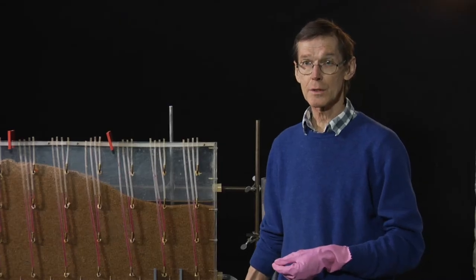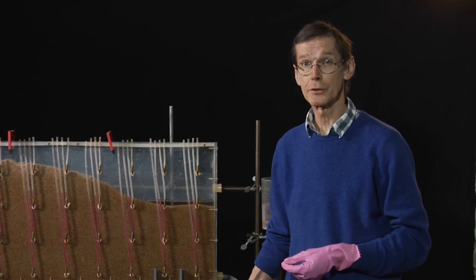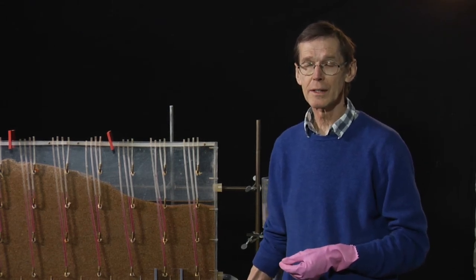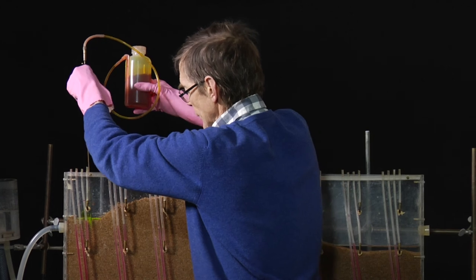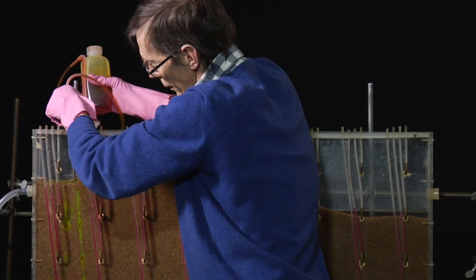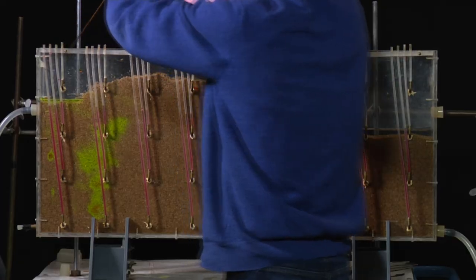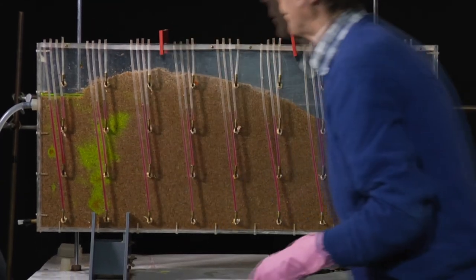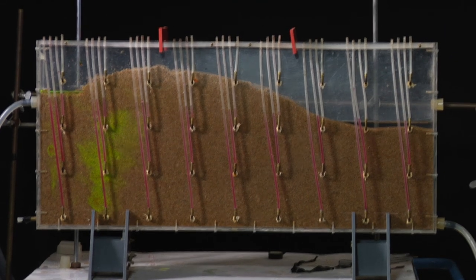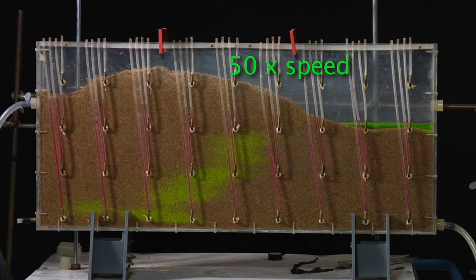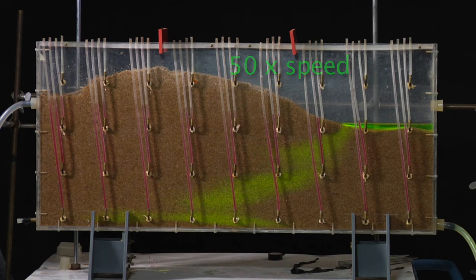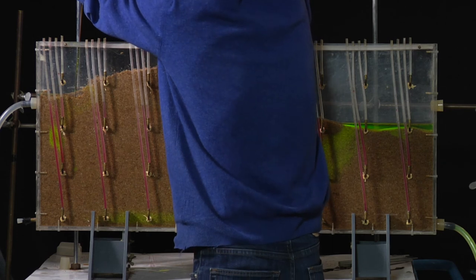I will inject a fluorescent tracer, sodium fluorescein, in the beginning of the flow path, and then we can follow the tracer clouds. The movement is quite slow, so we have increased the film speed. One more injection.